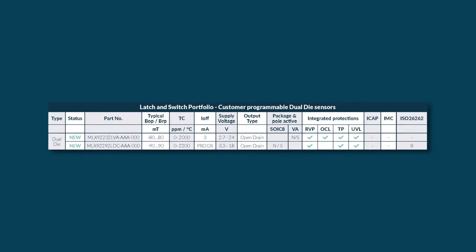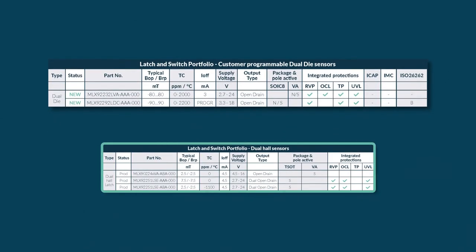Since we are aware that some applications require two outputs, we can also offer a dual-die solution. The MLX 92232 VA and the MLX 92292 LDC can be programmed independently from each other. Other versions, like the MLX 9255 LSE, are not programmable and cannot be changed after we trim them in our production line.